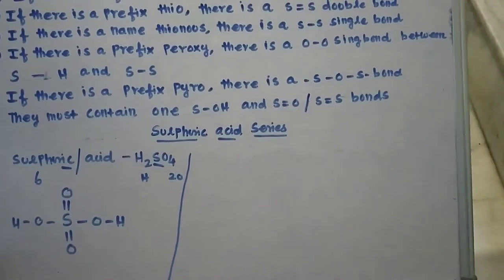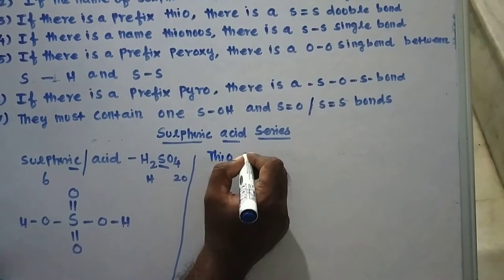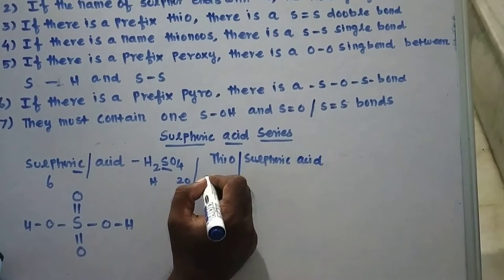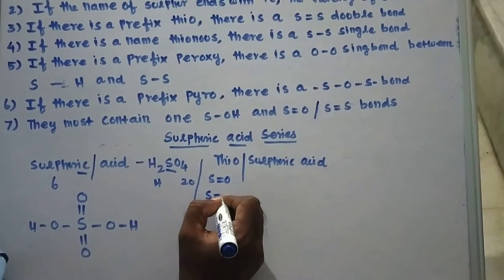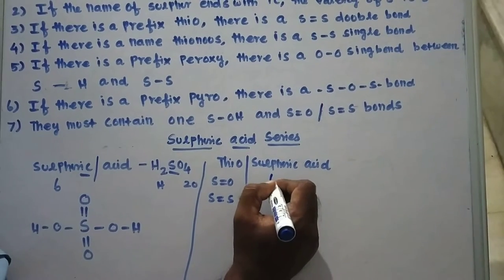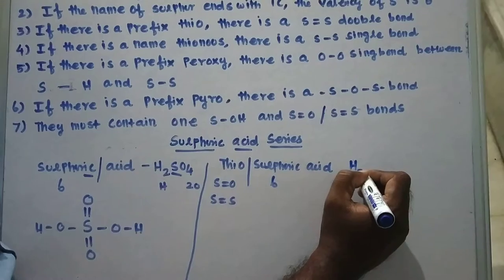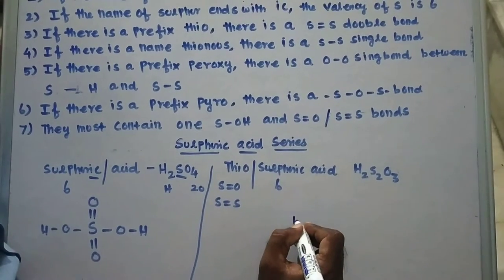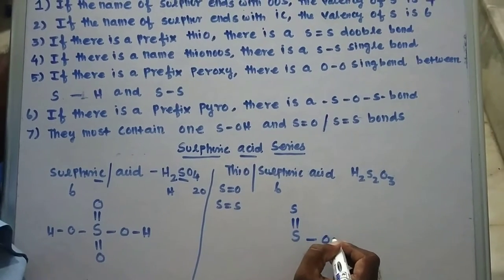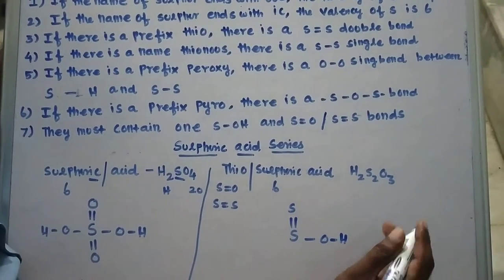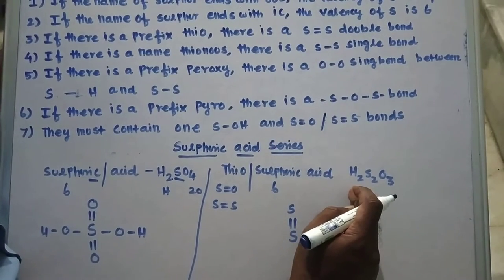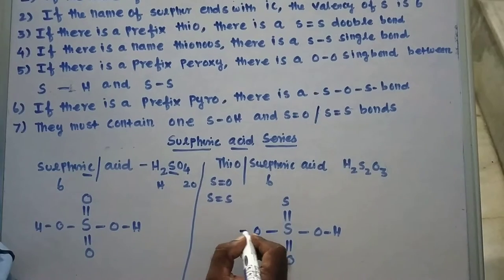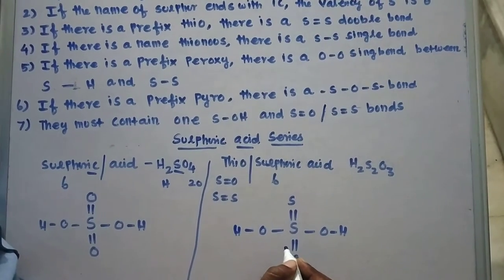Next we are going to discuss thiosulfuric acid. Thio means the S=O bond is replaced by an S=S bond. Sulfuric means the valency of sulfur is 6. So the formula is H₂S₂O₃. There is an S=S bond, then an OH group. The remaining hydrogen count gives one more, so there is a double bond O and another OH. This is the structure of thiosulfuric acid.